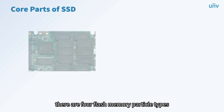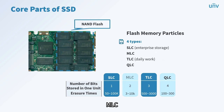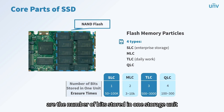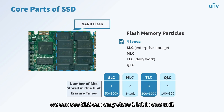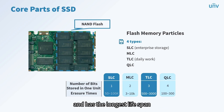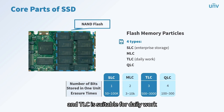There are four flash memory particle types: SLC, MLC, TLC, and QLC. The main differences are the number of bits stored per storage unit and erasure times. SLC stores one bit per unit and has the longest lifespan. Unit prices decrease from SLC to QLC in turn. With the highest stability, SLC is mostly used for enterprise storage, while TLC is suitable for daily work.